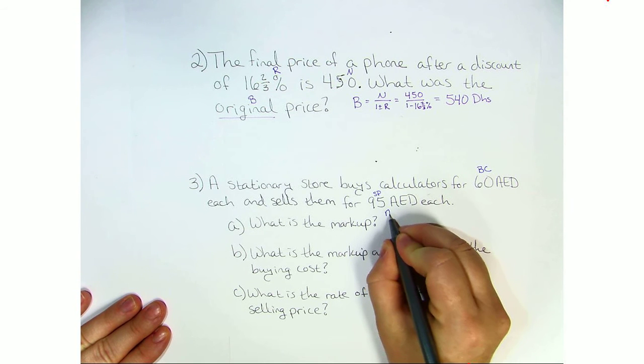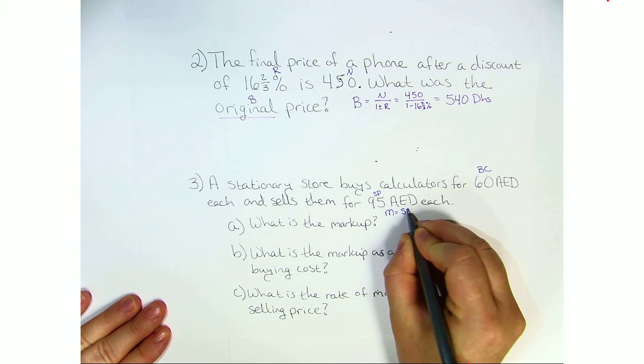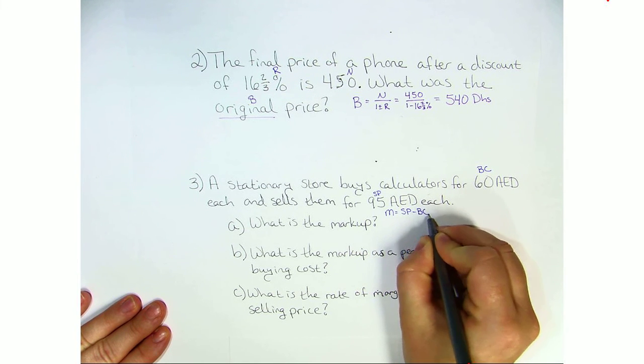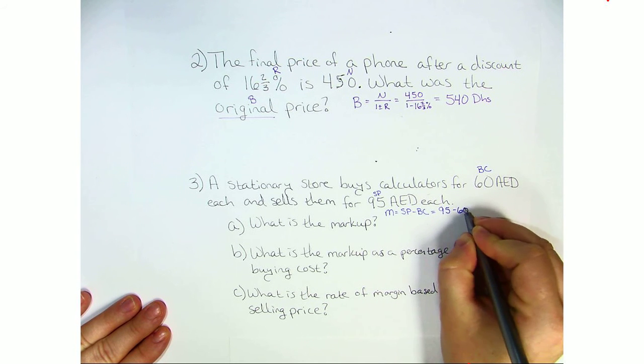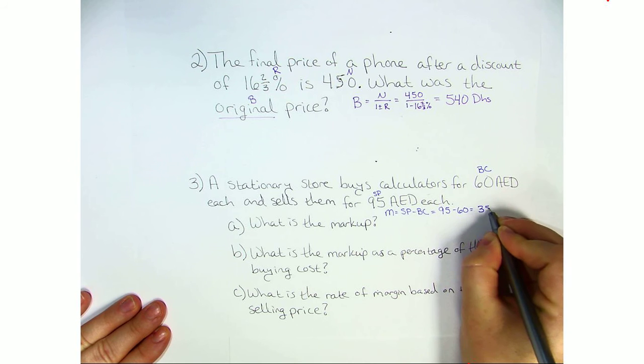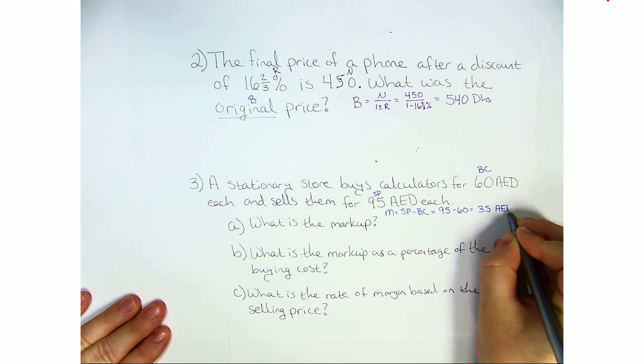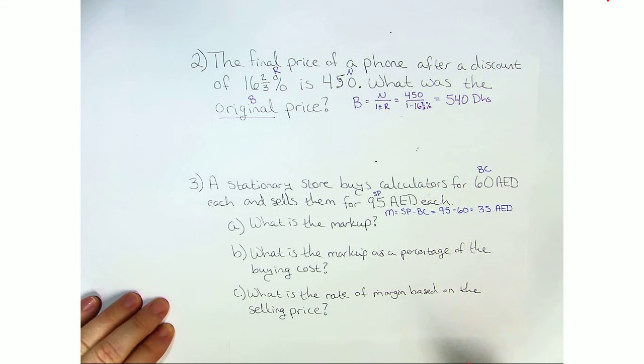So the formula for markup is the selling price minus the buying cost. In other words, 95 minus 60 is 35 dirhams. So that was A.